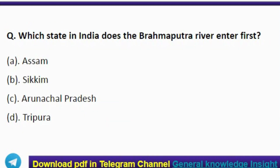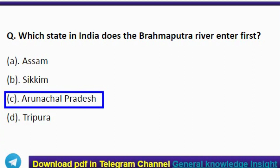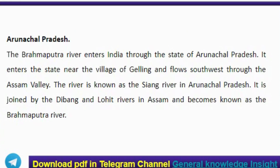Next question: which state in India does the Brahmaputra River enter first? The correct answer is option C, Arunachal Pradesh. The Brahmaputra River enters India through Arunachal Pradesh, near the village of Geling, and flows southwest through the Assam valley. The river is known as the Siang River in Arunachal Pradesh. It is joined by the Dihang and Lohit rivers in Assam and becomes known as the Brahmaputra River.